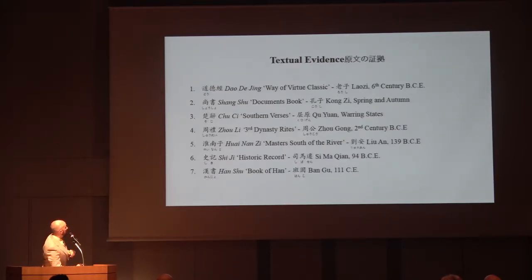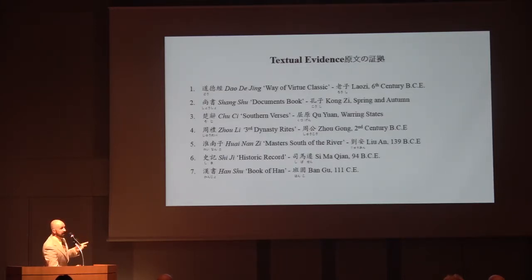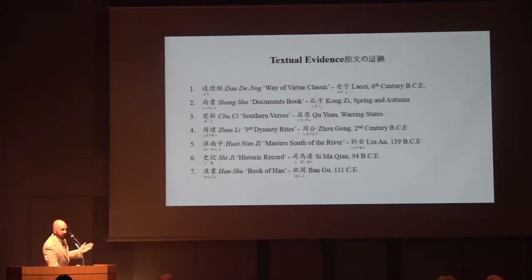There are seven different quotes we're going to look at: from the Dao De Jing; the Shang Shu (the Documents Book attributed to Confucius); Chu Ze, the southern verses; the Zhou Li, the Rites of Zhou; the Huainanzi, Masters South of the River; the Shi Ji, the Historic Record; and the Han Shu, the Book of Han — which is about everything that happened in the Han dynasty, so we still classify it as a classic.